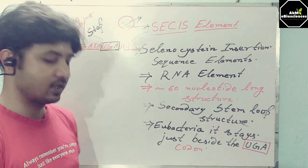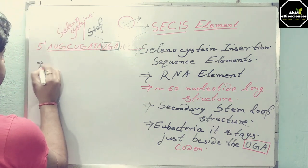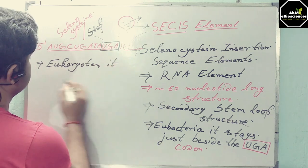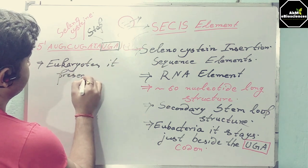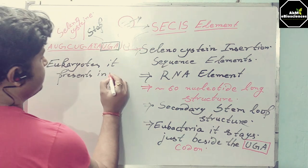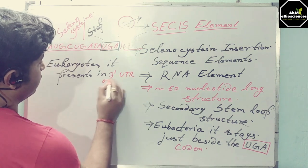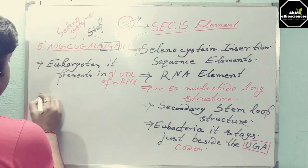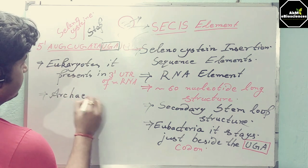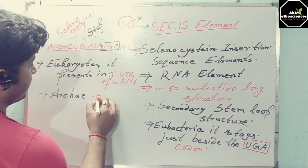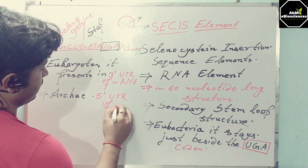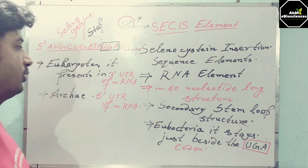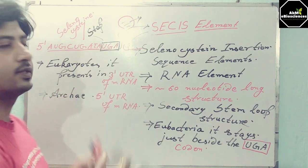Why does it present differently in eukaryotes or archaebacteria? In the case of eukaryotes, the SECIS element is found in the 3-prime UTR of the mRNA. Whereas in the case of archaebacteria, it resides in the 5-prime UTR of the mRNA. You can see the difference in the levels of organization of this SECIS element across organisms.